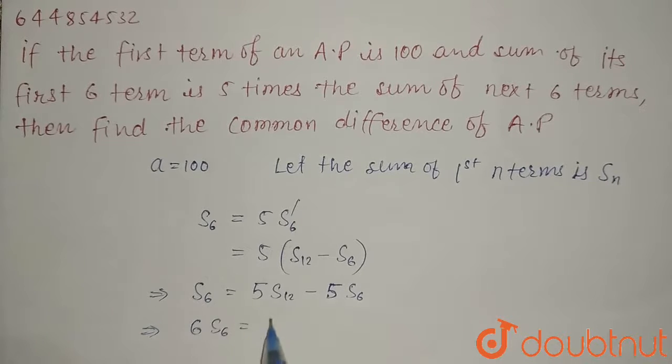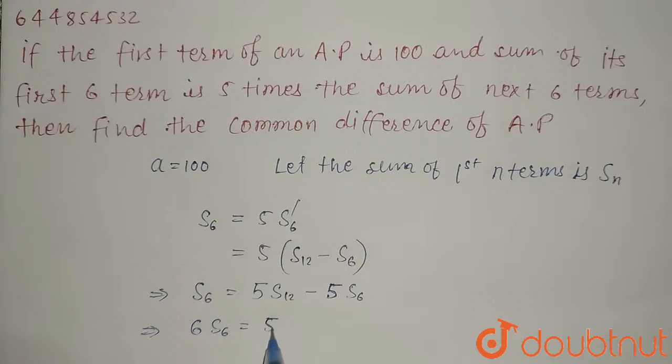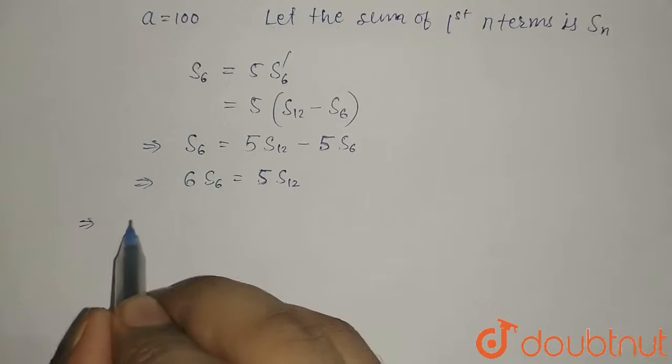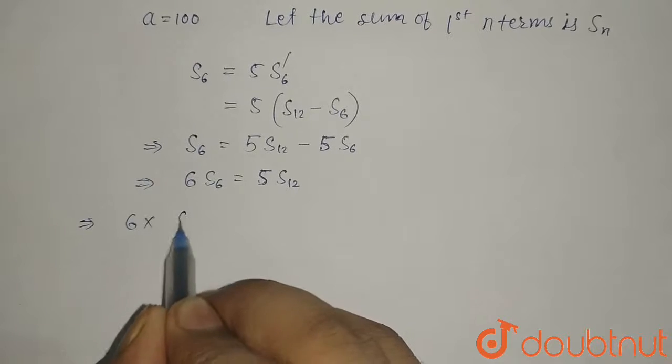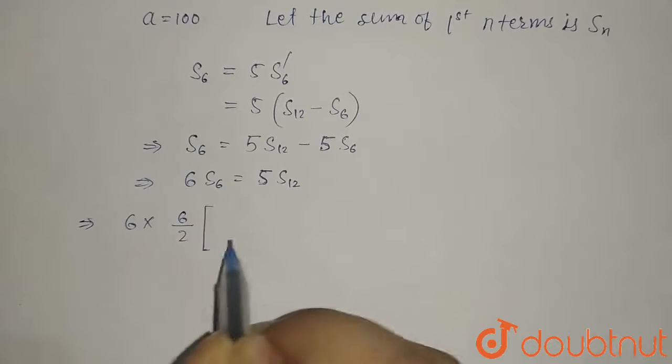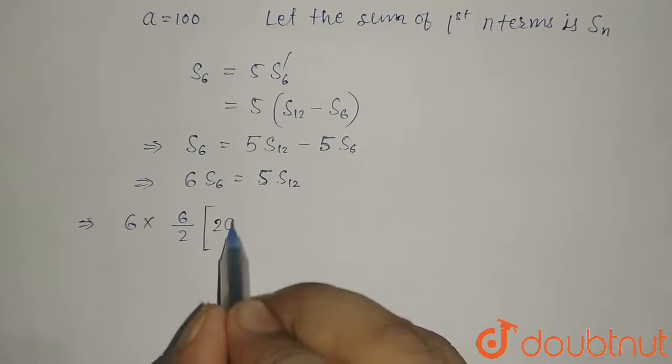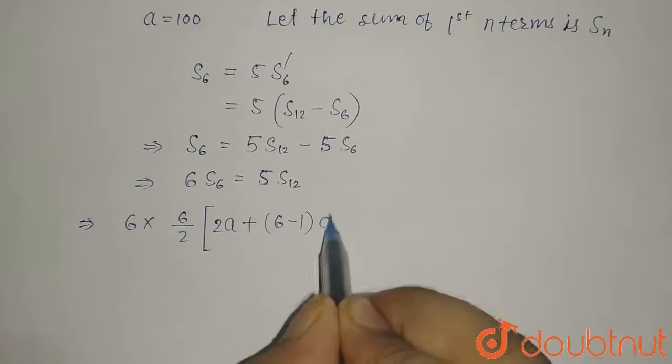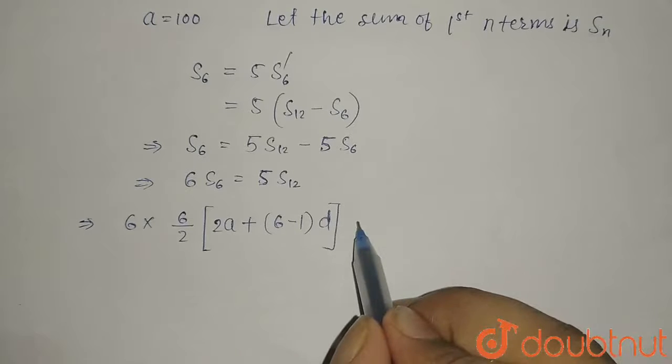As we know, S_6 will be (6/2)[2a + (6-1)d], which equals (6/2)[2a + 5d], where d is the common difference of that AP.